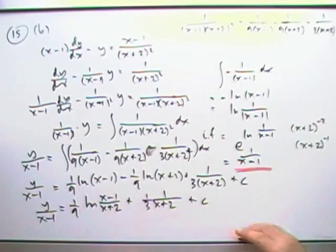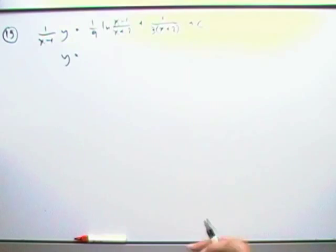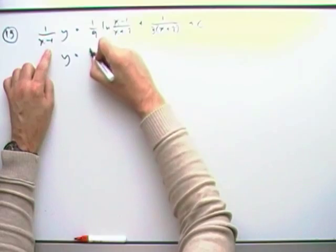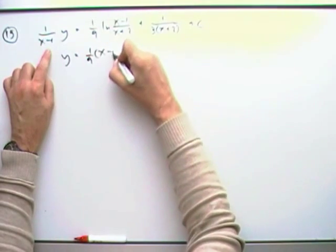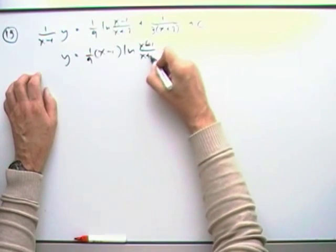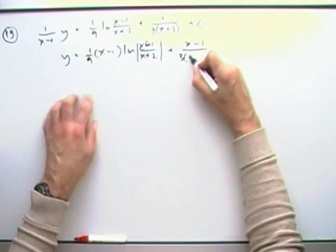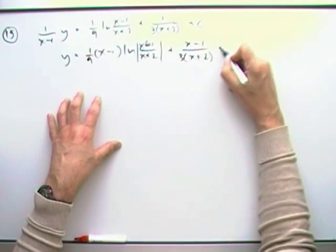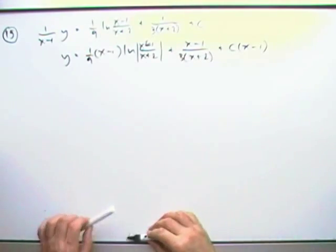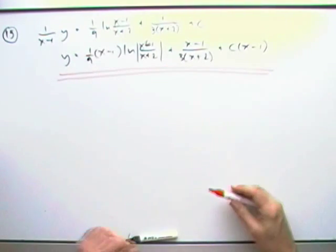Now, what can I do with that bunch? So the final part to get in the form of y equals some bunch of x's, we'll be multiplied by that, so what have I got? Everything times x minus 1, so I'll have one ninth of x minus 1 ln x minus 1 over x plus 2, plus x minus 1 over 3 times x plus 2, plus c times x plus 2. And I think that would do. What a horrible expression, unless I made a million mistakes somewhere.